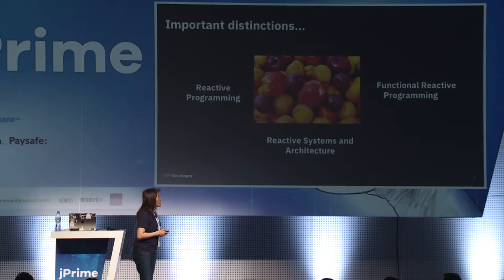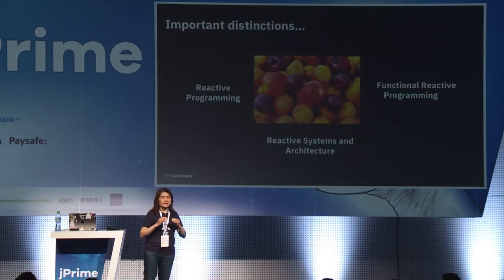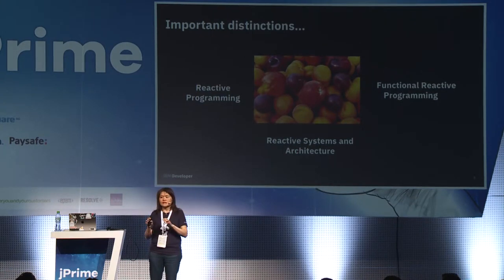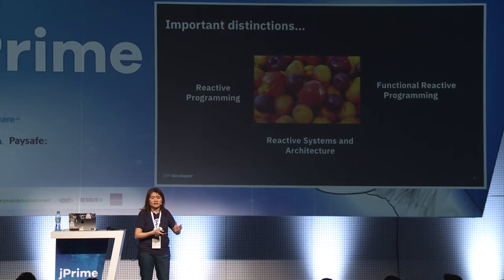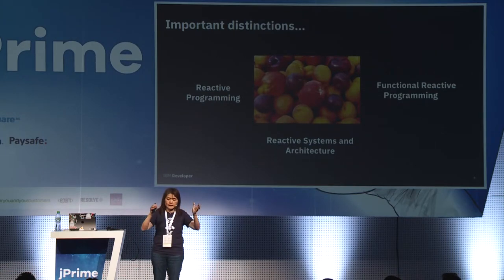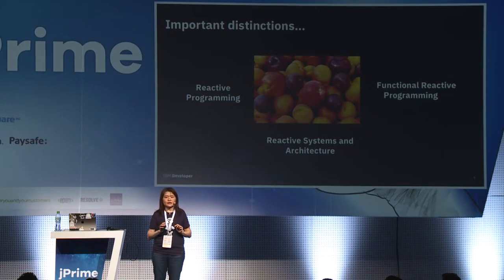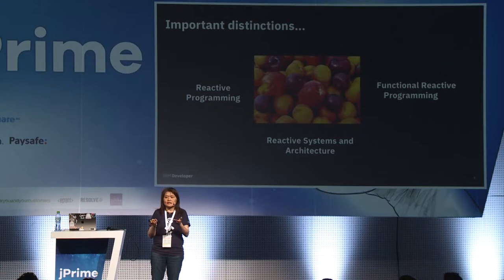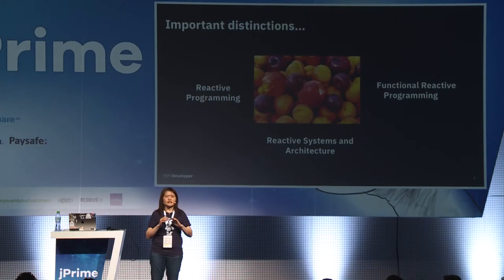Reactive systems and architecture bring reactivity to another level. When we talk about reactive systems, we're talking about an entire ecosystem filled with many components, each perhaps implemented using reactive programming principles. Reactive systems is one level up — it coordinates all the systems and components in how they communicate with one another without stepping on each other's toes. Managing it requires a lot of work: state management, resource management, things of that nature.